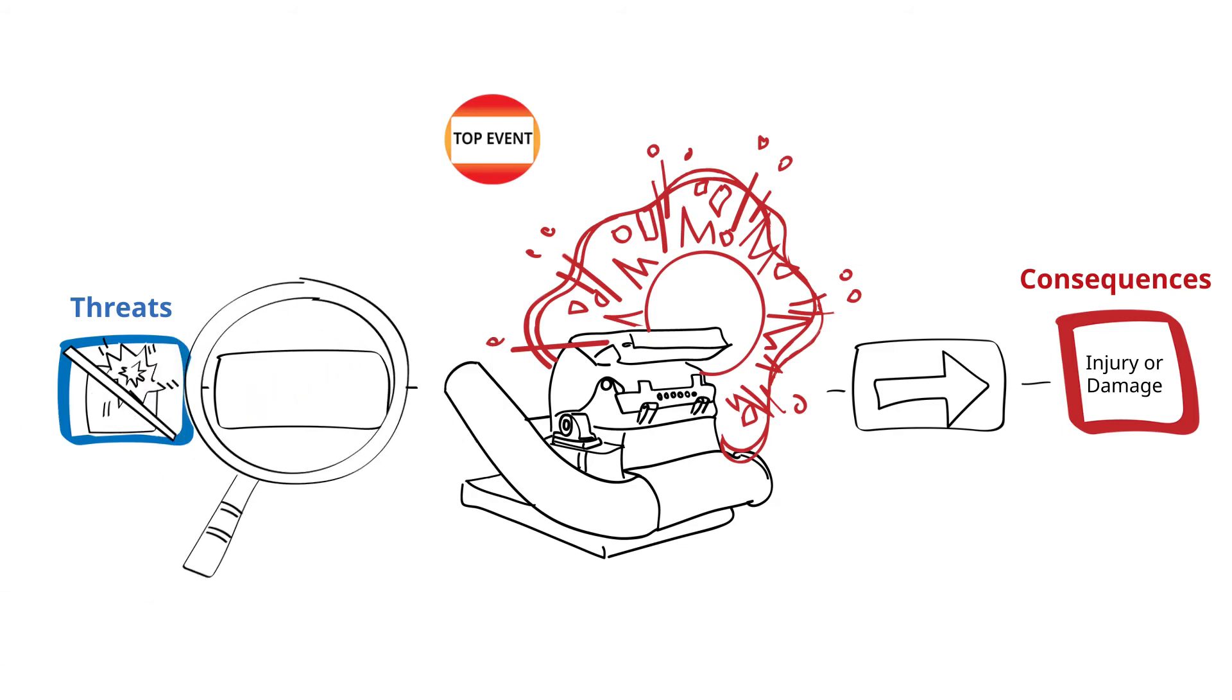Next we analyze those things that we have put in place to prevent the threat from causing the top event, that is, the controls. There are controls that prevent the threat from occurring, for example, maintenance plans for testing the spark sensor.